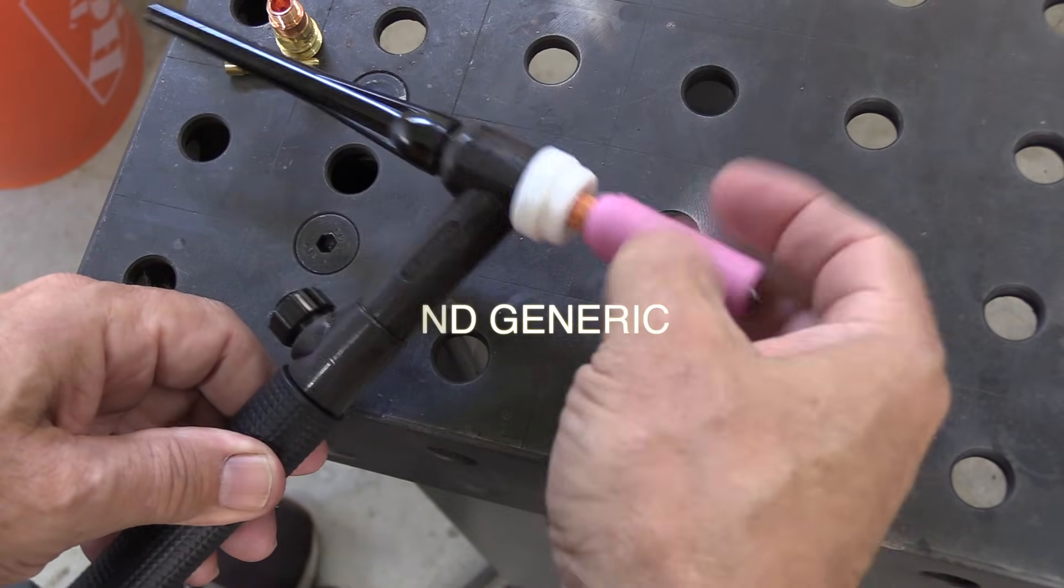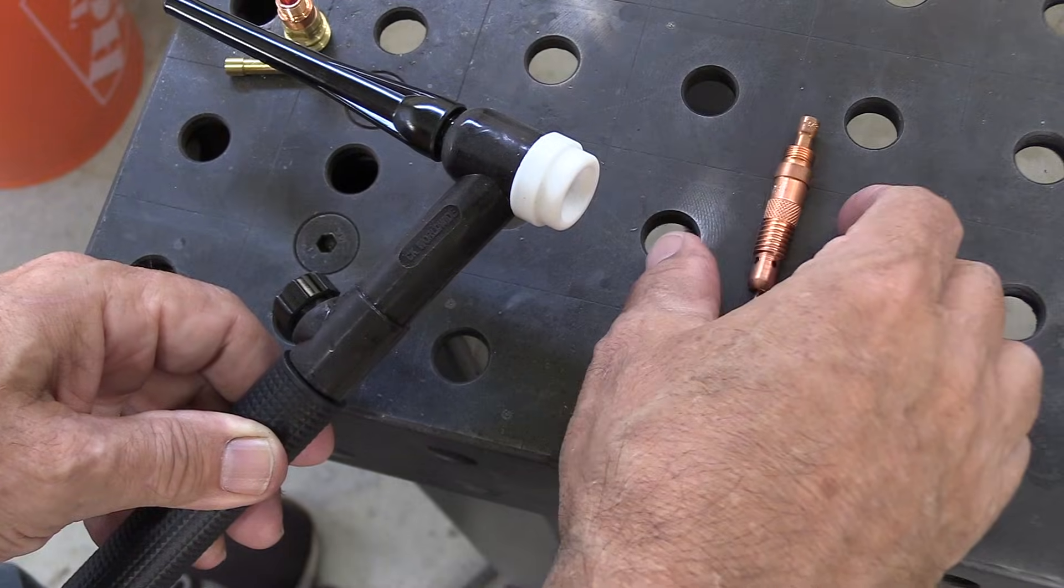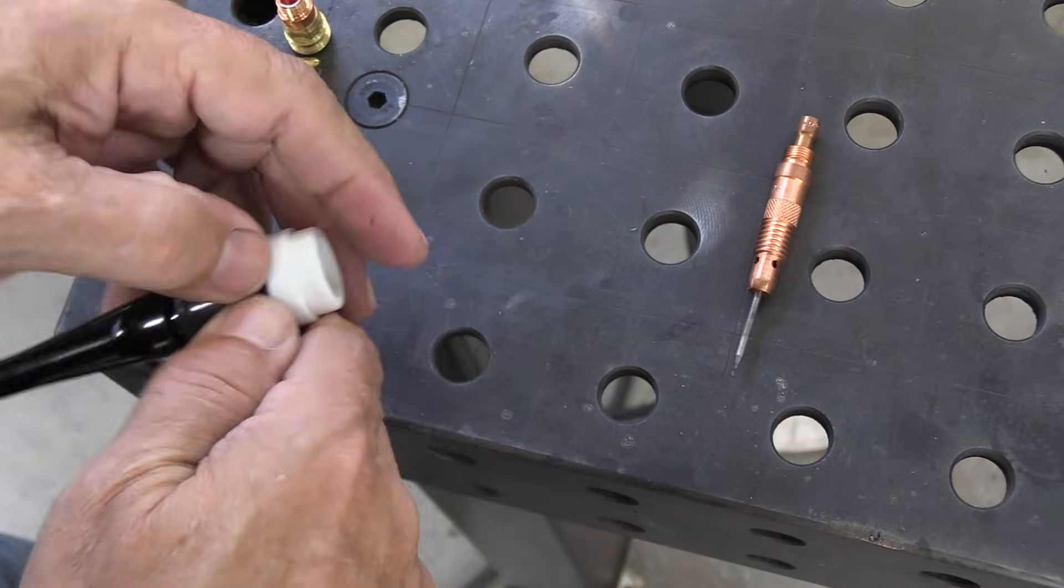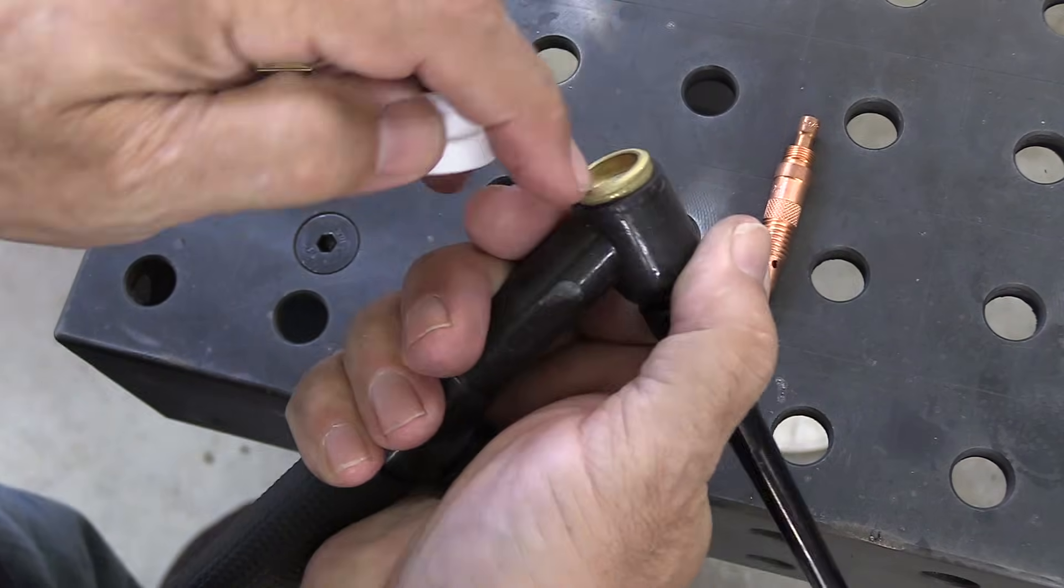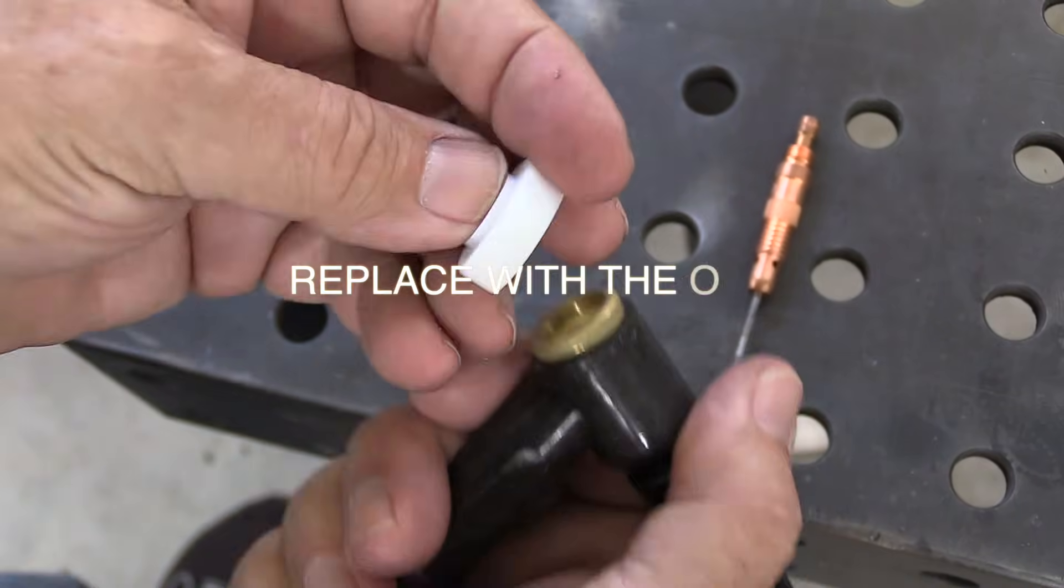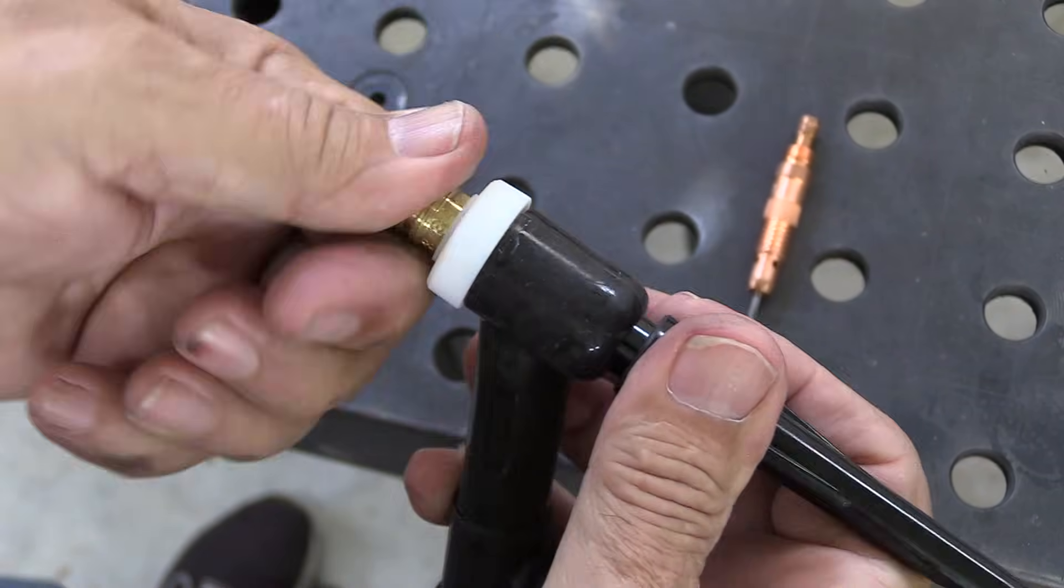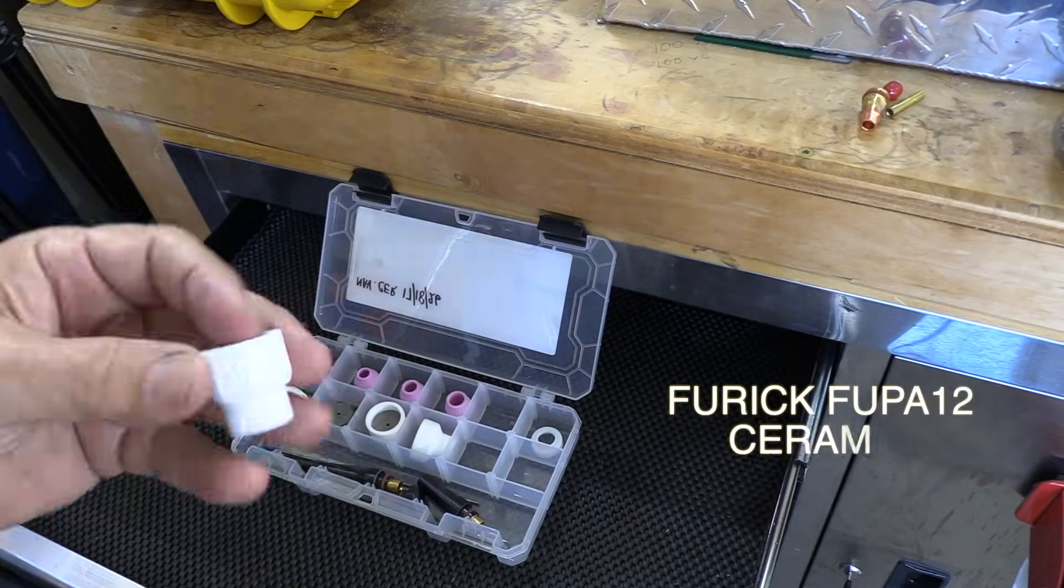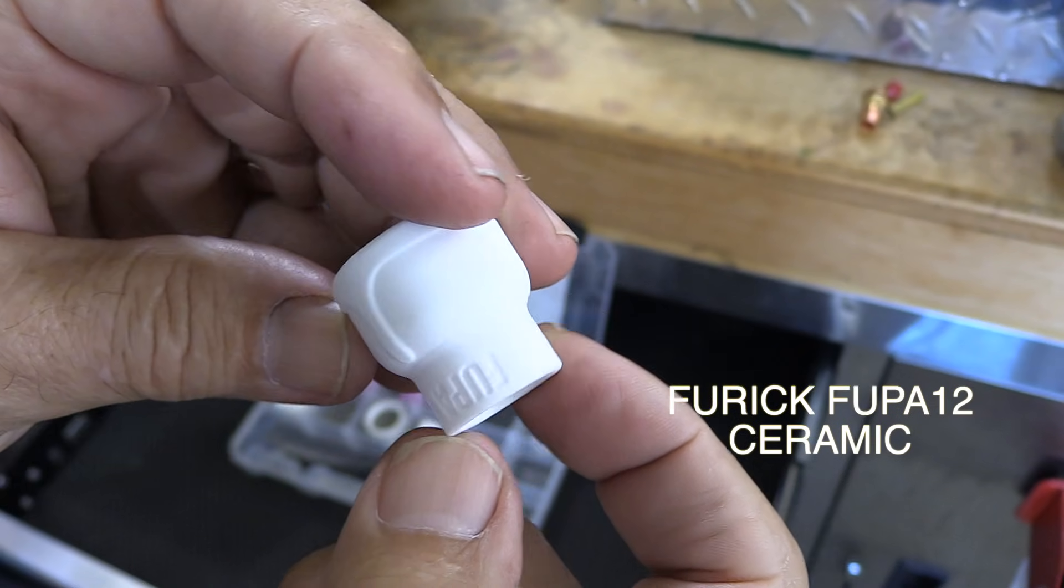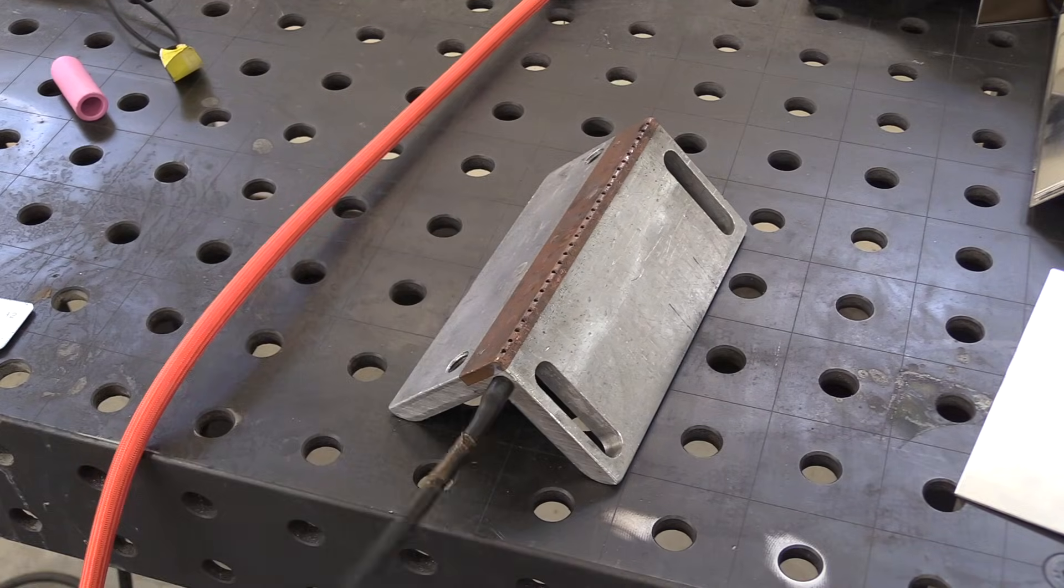If you're still using the standard cups and collet bodies that came with your torch or machine, you're probably not getting the best results possible. Switching over to stubby style hardware and a different cup is very easy. I just need to remove the heat shield insulator, pop the right one on, and thread in the Furik gas lens and wedge collet that comes with the kit. The thing that really helps with gas coverage is the extra diffusers in these cups along with the gas lens diffusers.